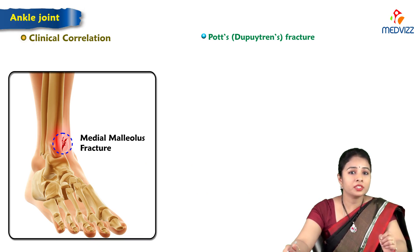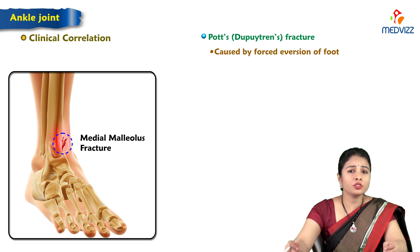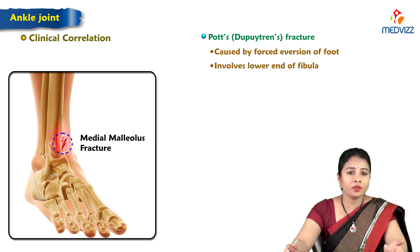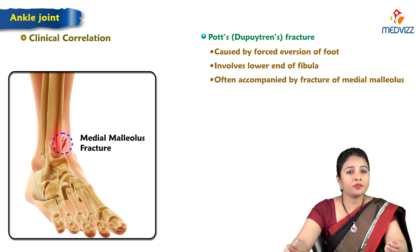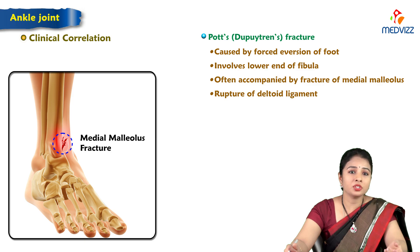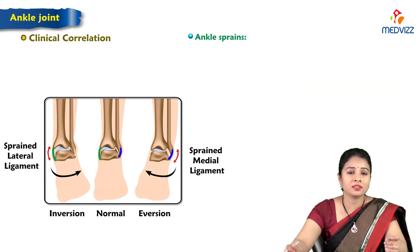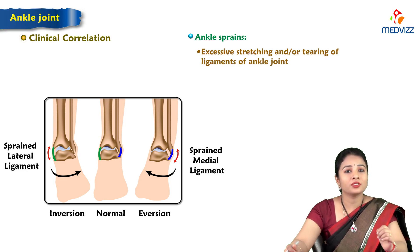Regarding clinical aspects, Pott's fracture (also called Dupuytren's fracture) is caused by forced eversion of the foot. It involves the lower end of the fibula and is often accompanied by fracture of the medial malleolus and rupture of the deltoid ligament.